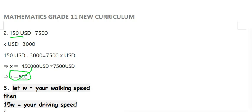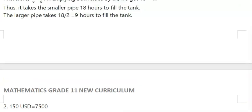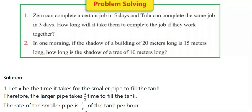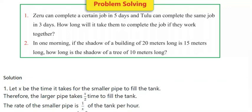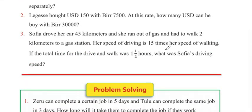Question number three: Sofia drove her car 45 kilometers and then ran out of gas and had to walk 2 kilometers to a gas station. Her speed of driving is 15 times her speed of walking. If the total time for the drive and walk was one and a half hours, what was Sofia's driving speed?